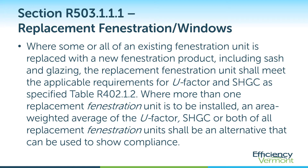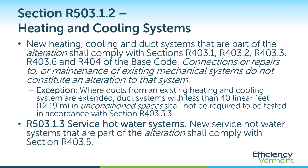Section R503.1.1.1 on replacement windows or fenestrations requires that any new or replacement window meet the U-value and solar heat gain coefficient requirements specified for new construction in table R402.1.2. There is an allowance for an area-weighted average of the U-factor, solar heat gain coefficient, or both for all replacement windows as an alternative to show compliance. Section R503.1.2 on heating and cooling systems follows the same theme: new heating, cooling, and duct systems as part of an alteration need to comply with the new construction requirements in sections R403 and R404 of the base code. Connections, repairs, or maintenance of existing systems do not constitute an alteration to that system.